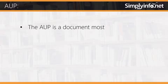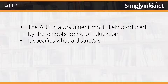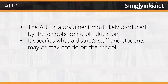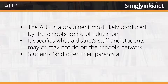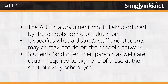The AUP is a document most likely produced by the school's Board of Education. It specifies what a district's staff and students may or may not do on the school's network. Students, and often their parents as well, are usually required to sign one of these at the start of every school year.